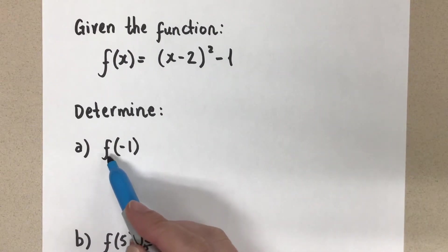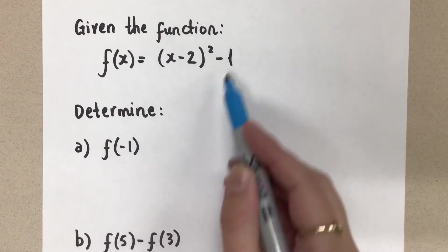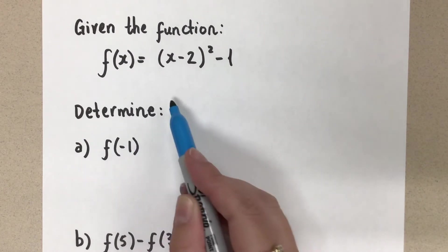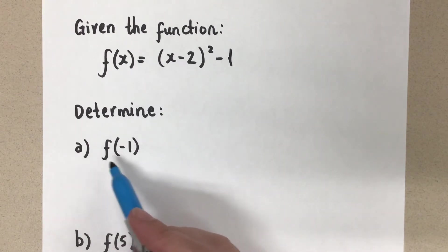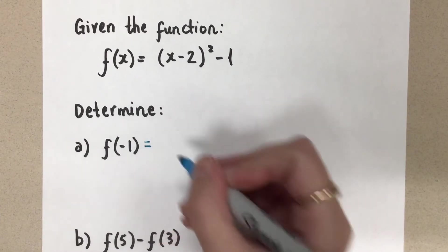Okay, let's move on to this. So here we want to find f at negative 1. This means the function, which is this, evaluated at negative 1. Meaning everywhere we see an x, we're going to plug in a negative 1 and then we're going to evaluate and that will be the y value when x equals negative 1. That is it.